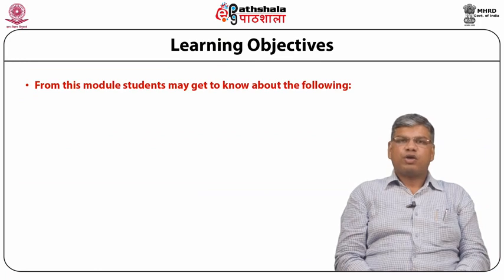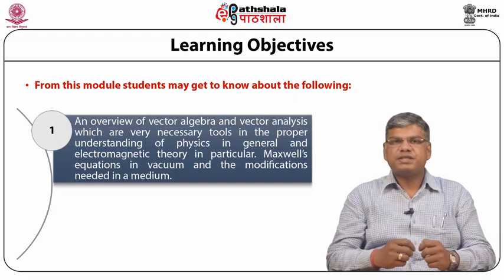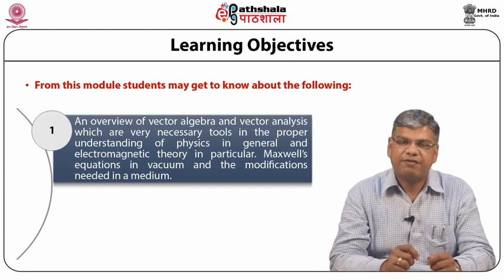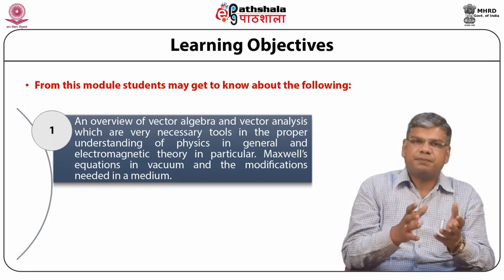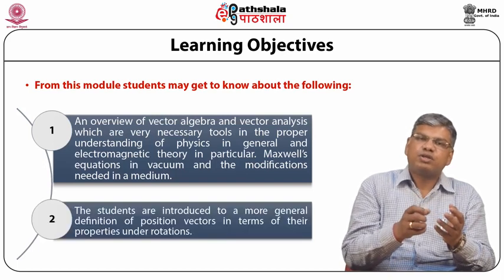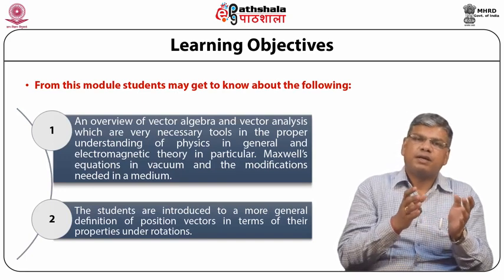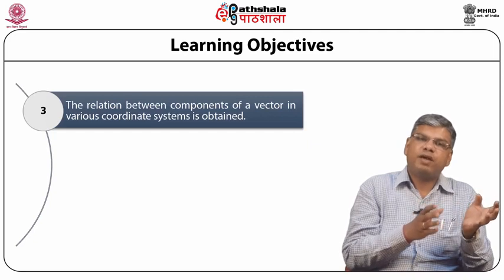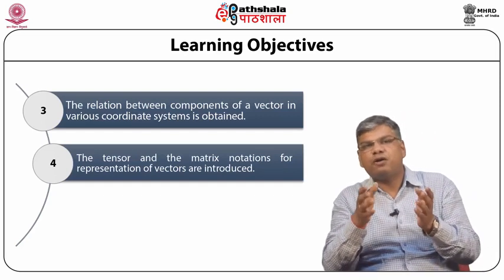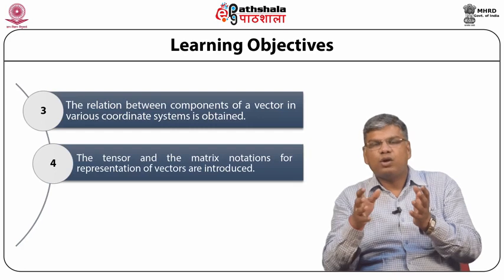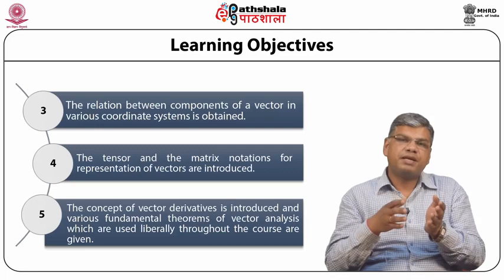From this module you may get to know about the following: an overview of vector algebra and vector analysis, which are very necessary tools for proper understanding of physics in general and electromagnetic theory in particular; Maxwell's equations in vacuum and the modifications needed in a medium; a more general definition of position vectors in terms of their properties under rotation; the relation between the components of a vector in various coordinate systems; tensor and matrix notations for representation of vectors; and vector derivatives and fundamental theorems of vector analysis.